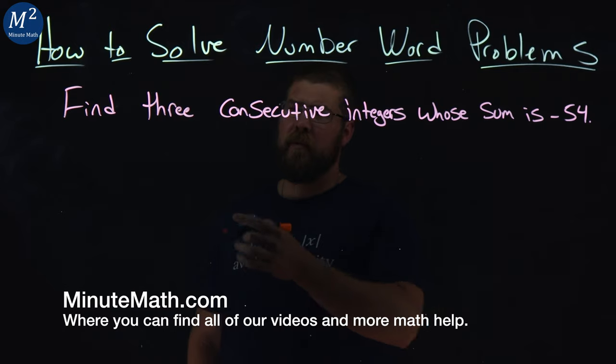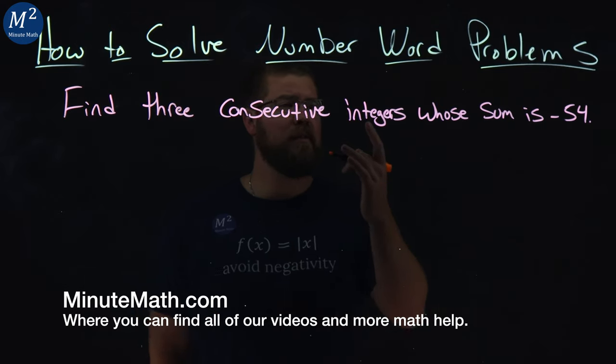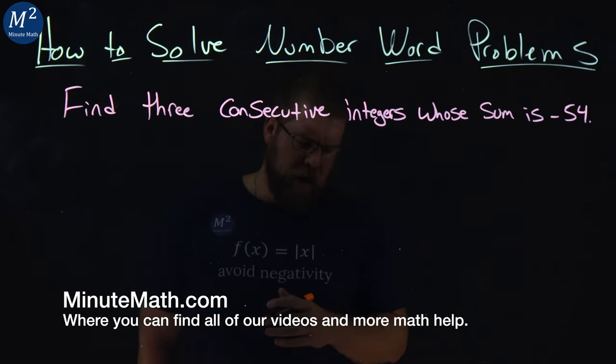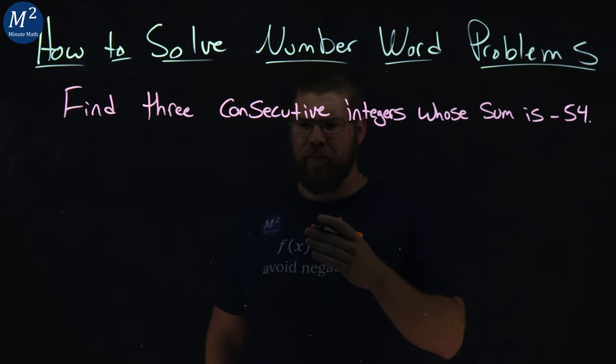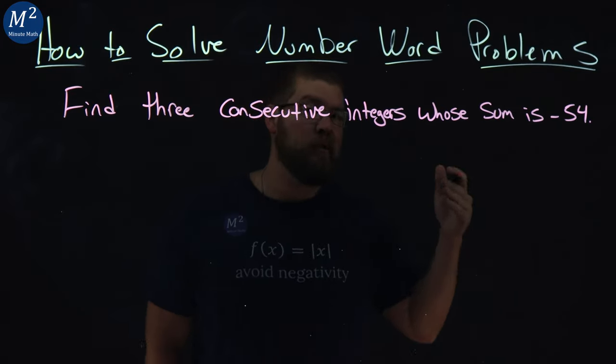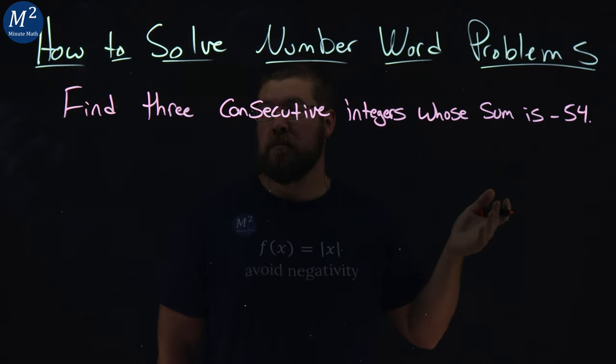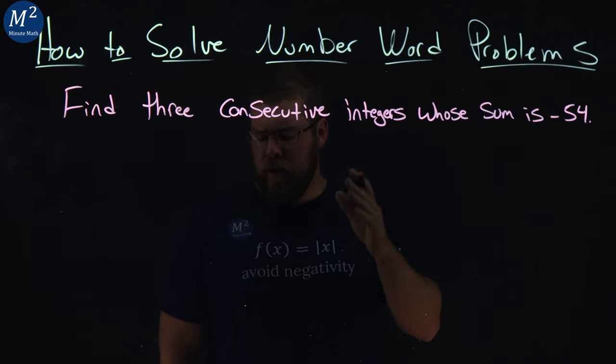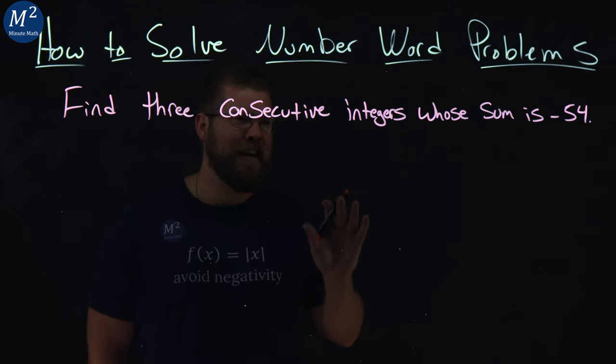We have a problem here: Find three consecutive integers whose sum is negative 54. What is a consecutive integer? Well, numbers that come right after each other - like 1, or negative 5, negative 4, negative 3. That's the basics of consecutive integers.